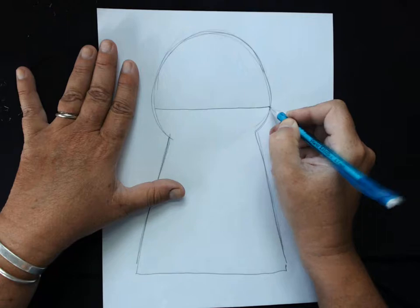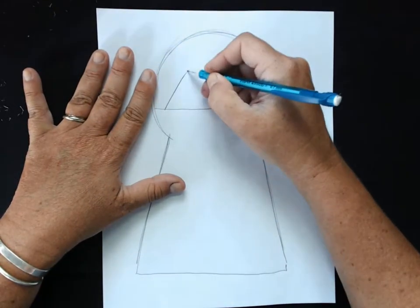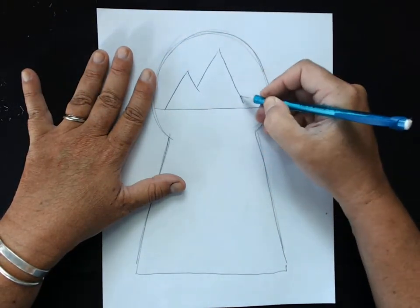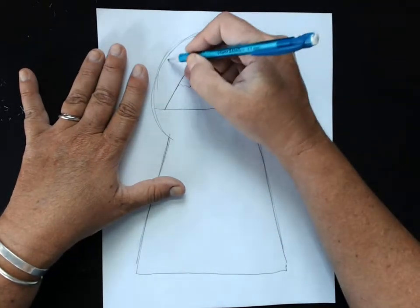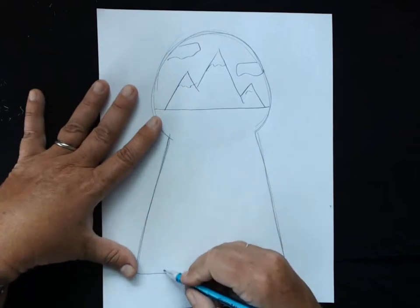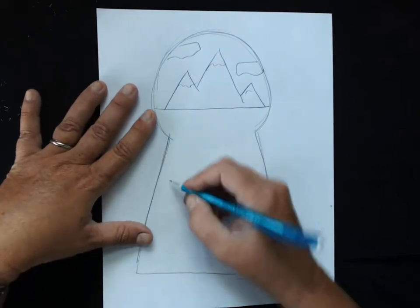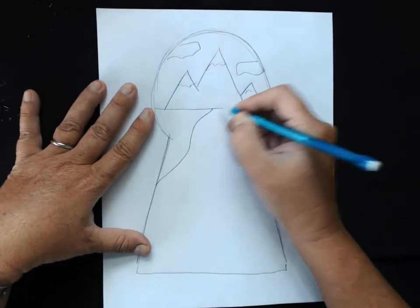Then I can maybe draw some mountains, whatever kind of mountains you want. Maybe some clouds up here, and maybe I'm on a path going off into the mountains.